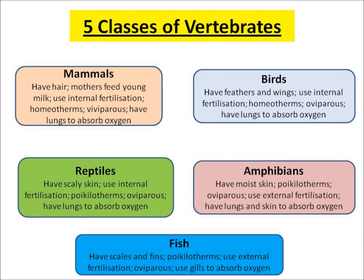The next category is amphibians. They have moist skin and they are poikilotherms too, which means they are cold-blooded. They lay eggs — think about frog spawn — so they are oviparous. They use external fertilization, so the sperm meets the egg outside of the female, and they can get oxygen into their body through their lungs or through their skin.